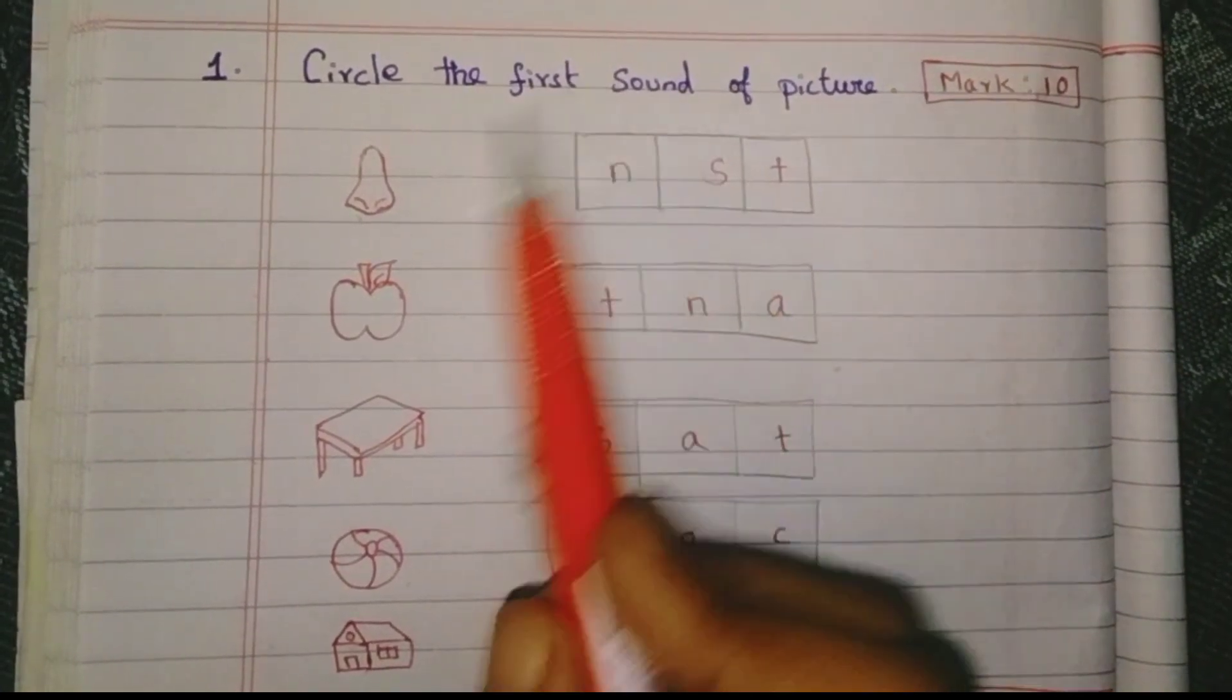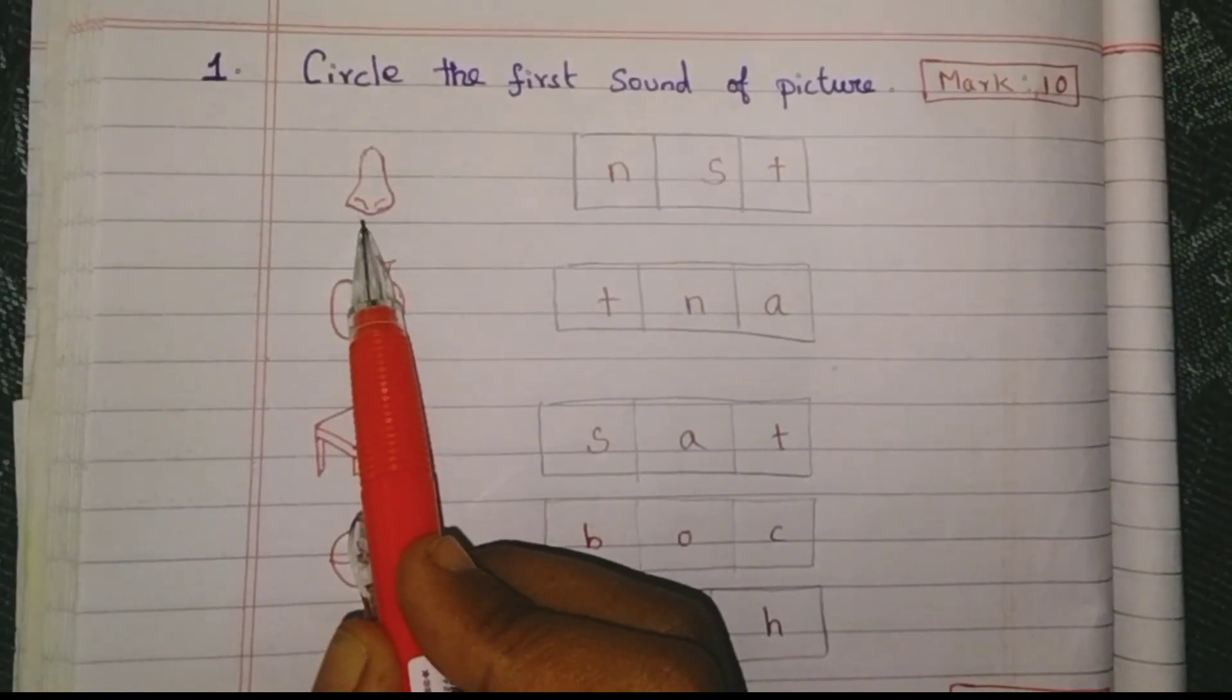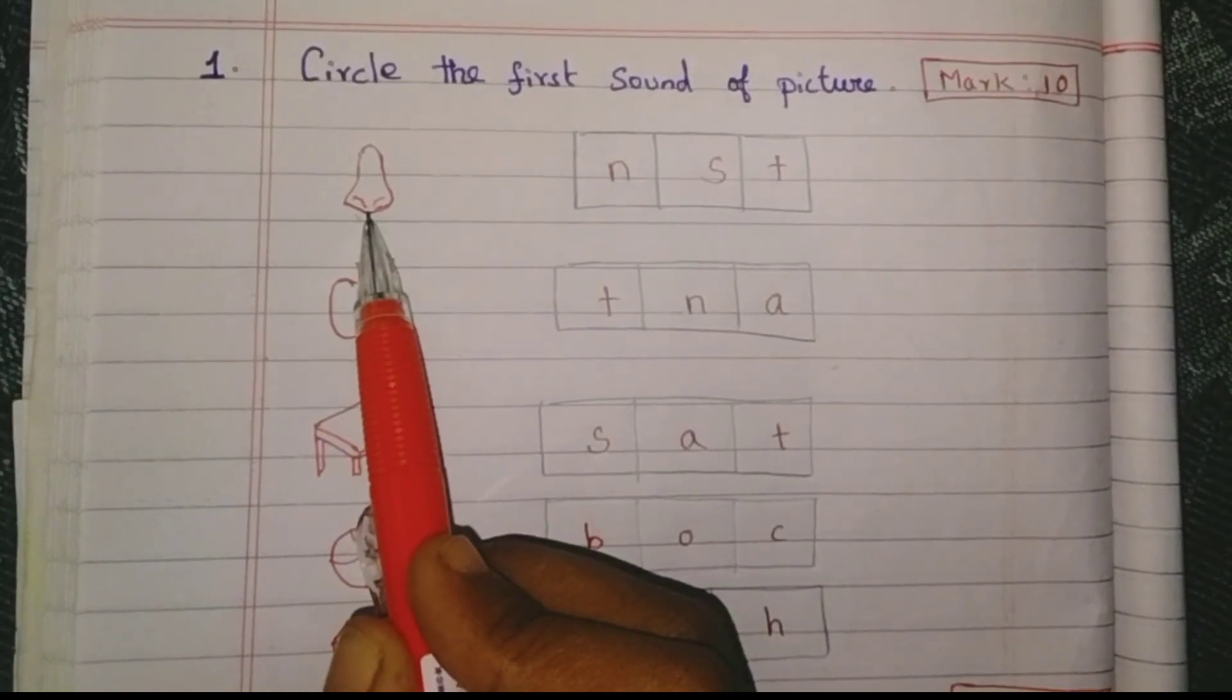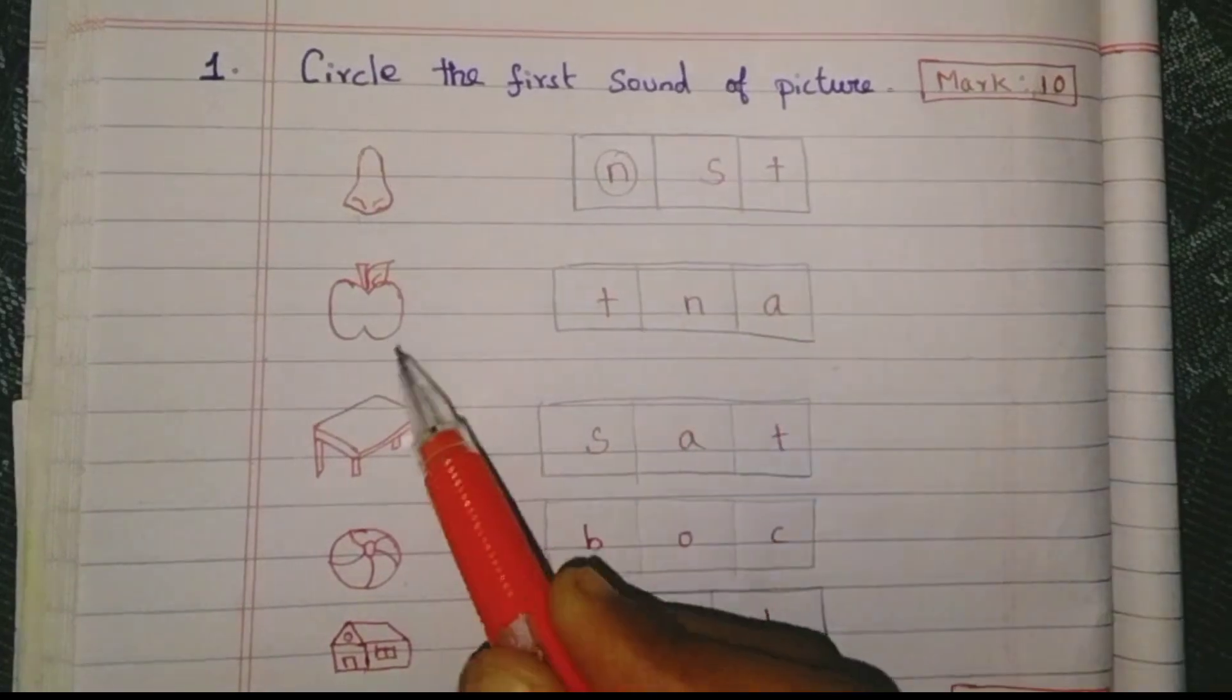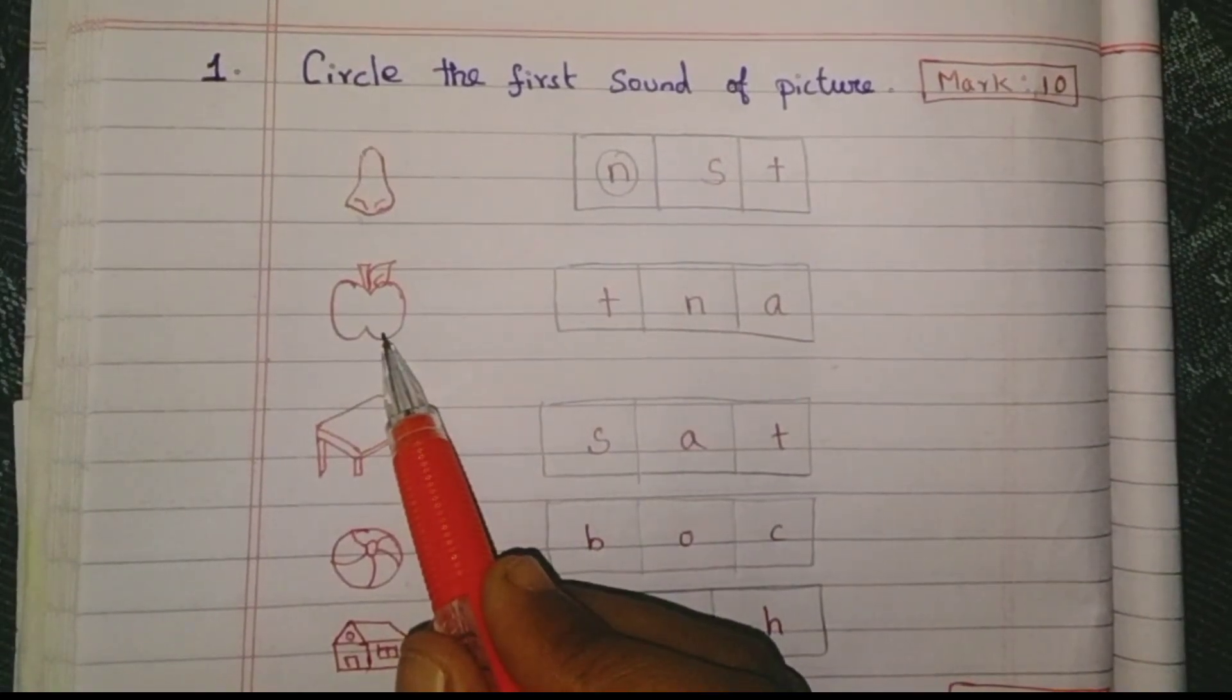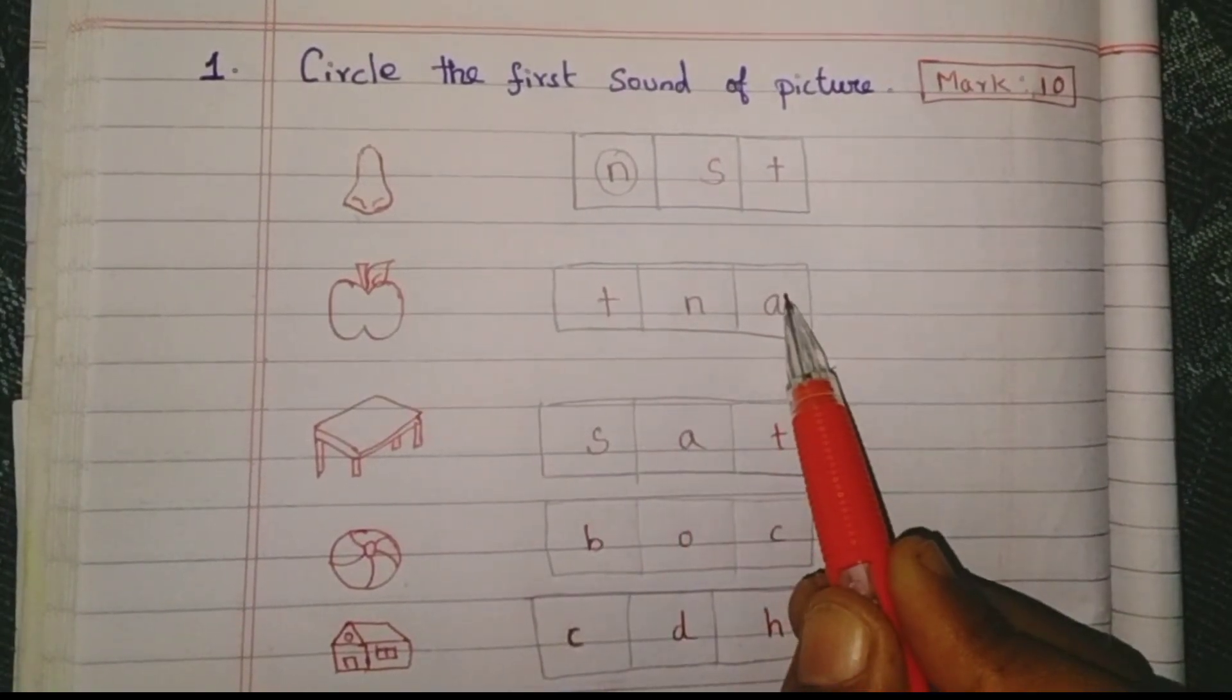First sound of the pictures. First picture, nose. Nose, first sound, N sound. Second, apple. A sound, apple.